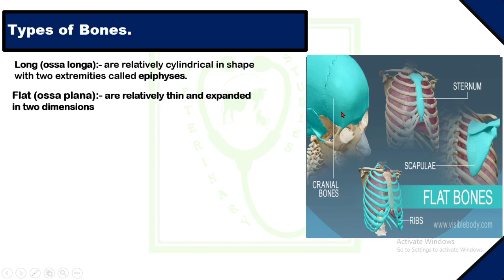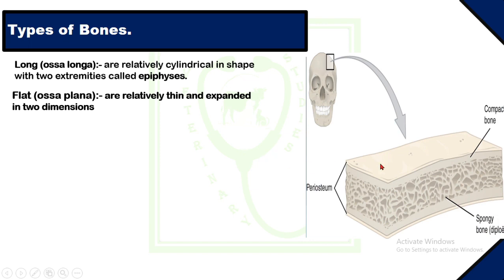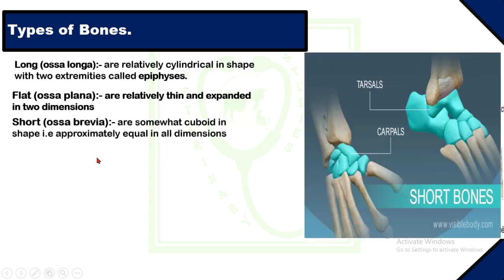The second type is plate bones, or ossa plana — they are relatively thin and expanded in two dimensions. These bones consist of two plates of compact substance: lamina externa and lamina interna, which are separated by diploe. Diploe is the spongy bone separating the inner and external laminae of the cortical bone of the skull. Flat bones include the bones of the skull, sternum, ribs, and pelvis, and their function is to protect the internal organs. Short bones are somewhat cuboid in shape and approximately equal in all dimensions; they have no marrow cavity and are found in complex joints such as the hock joint or fetlock joint.